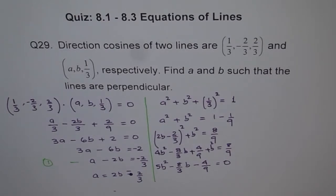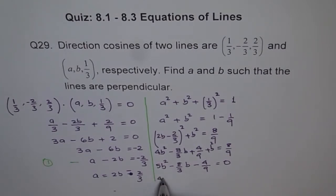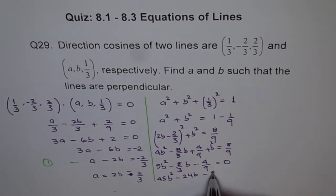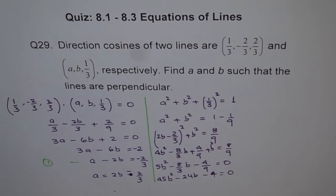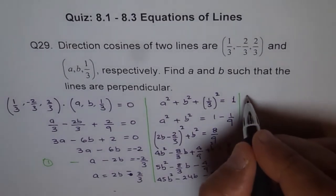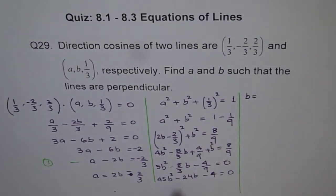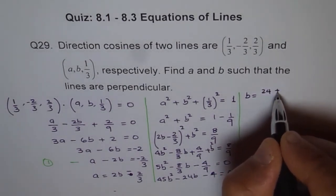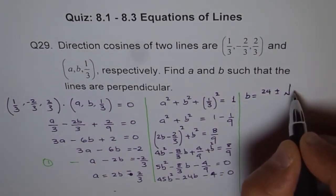To clear fractions, multiply everything by 9: 45B² - 24B - 4 = 0. That's a quadratic equation. Using the quadratic formula: B = (-(-24) ± √(24² - 4·45·(-4))) / (2·45), which is (24 ± √(576 + 720)) / 90.